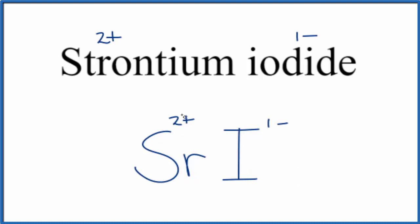We have two plus and one minus, so we need two of these iodines here to balance the two plus. We'll put a two as the subscript. Two times one minus, that's two minus. So two plus and two minus, that adds up to zero.